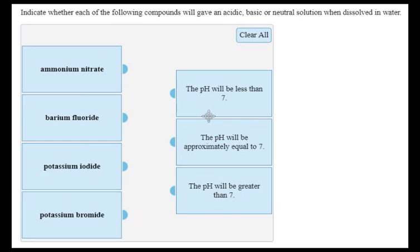The first formula we have is ammonium nitrate. We've already discovered that ammonium is a weak acid. Nitrate is a conjugate base of a strong acid, so nitrate contributes no acid-base chemistry. Therefore the pH of this solution will be less than 7.